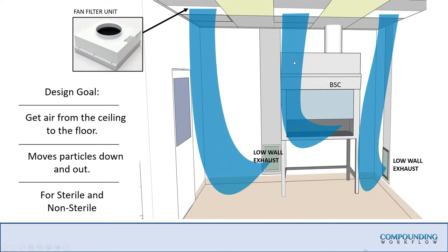There is a carve-out that says if you use a ceiling return or ceiling exhaust, you must prove it with a smoke study. From talking to colleagues in the certification business, you'll never achieve that — and that's part of the lawsuit mentioned earlier, where low walls were not integrated, there's no dilution, they can't pass a smoke study.